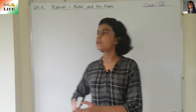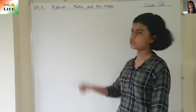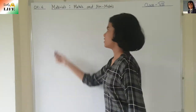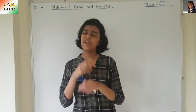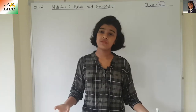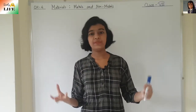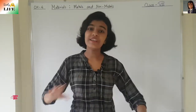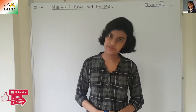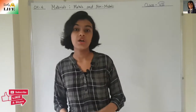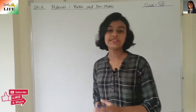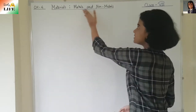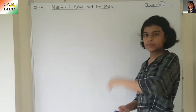The name of the chapter is materials, metals and non-metals. What are materials? Any object — chair, book, table, pane, etc. — is known as a material. Materials are divided into two parts: metals and non-metals.